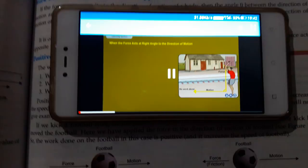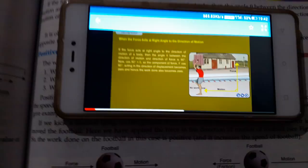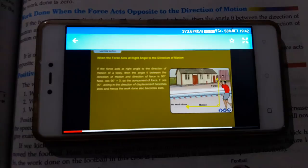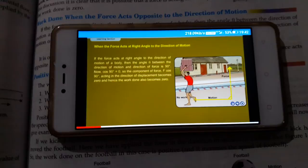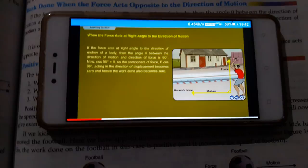At right angle to the direction of motion of a body, the angle theta between the direction of motion and the direction of force becomes 90 degrees. Now cos 90 degrees is zero, so the component of force F cos 90 degrees acting in the direction of displacement becomes zero.